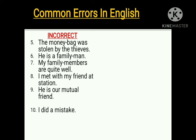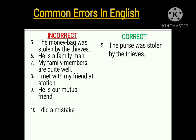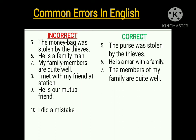These are the incorrect sentences. The correct ones: The fifth one — in place of 'money bag,' you must say 'purse.' So 'The purse was stolen by the thieves.' The sixth — 'He is a family man' is a wrong concept; you must say 'He is a man with a family.' The seventh — in place of 'my family members,' you must say 'The members of my family are quite well.'